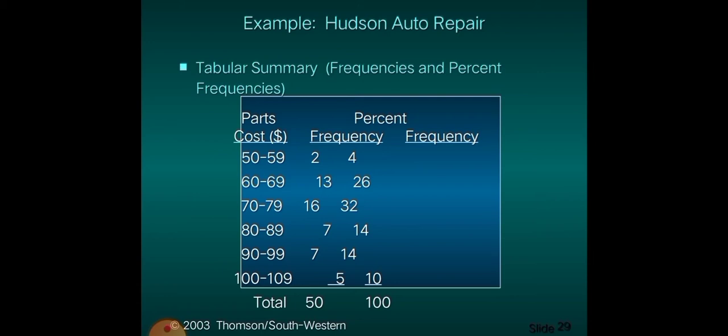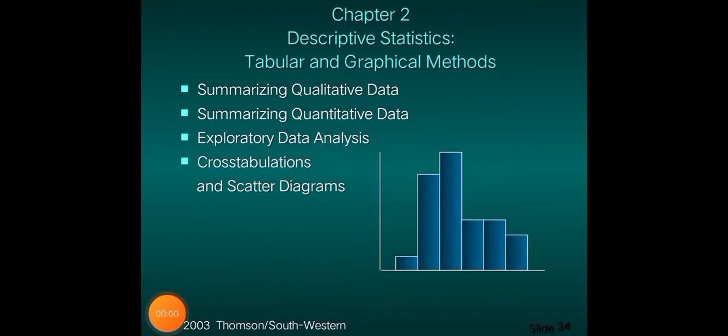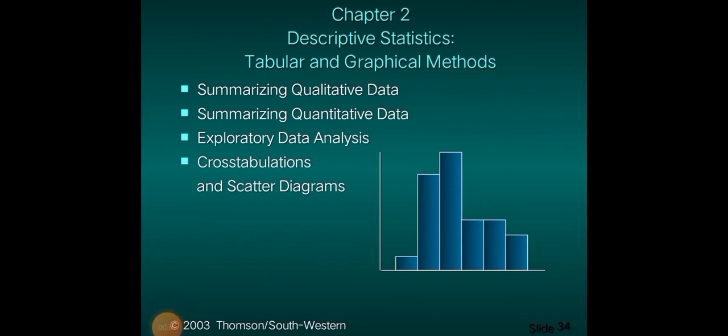So to summarize: given the raw data, you determine the approximate class width. For example, if the problem gives 6 classes, that is your denominator for the difference between the largest data value minus the smallest data value. Let's now proceed to Chapter 2.